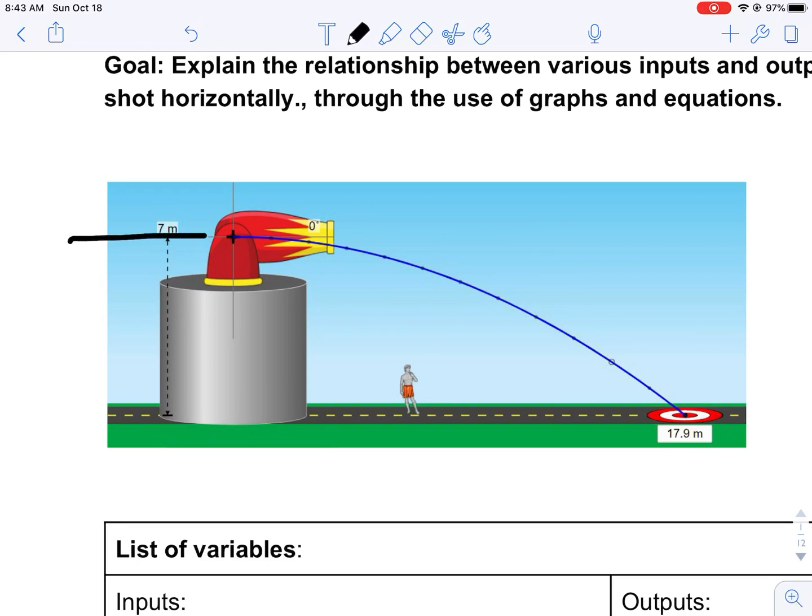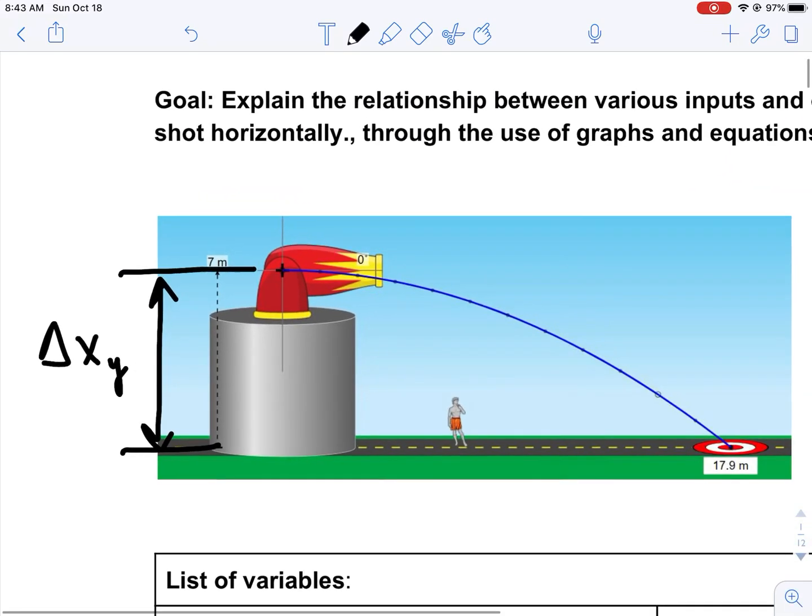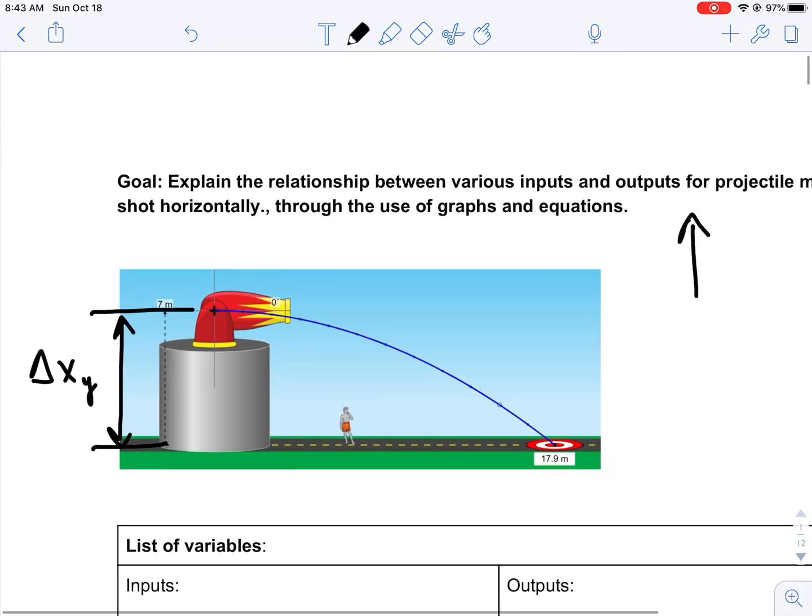If we call the ground zero, whatever this distance that the cannonball or baseball, whatever we're launching, whatever distance it falls, that is going to be the vertical displacement of our object. In this case, if we're defining up as positive and right as positive, that means our displacement is going to be negative. Our vertical displacement is going to be negative.